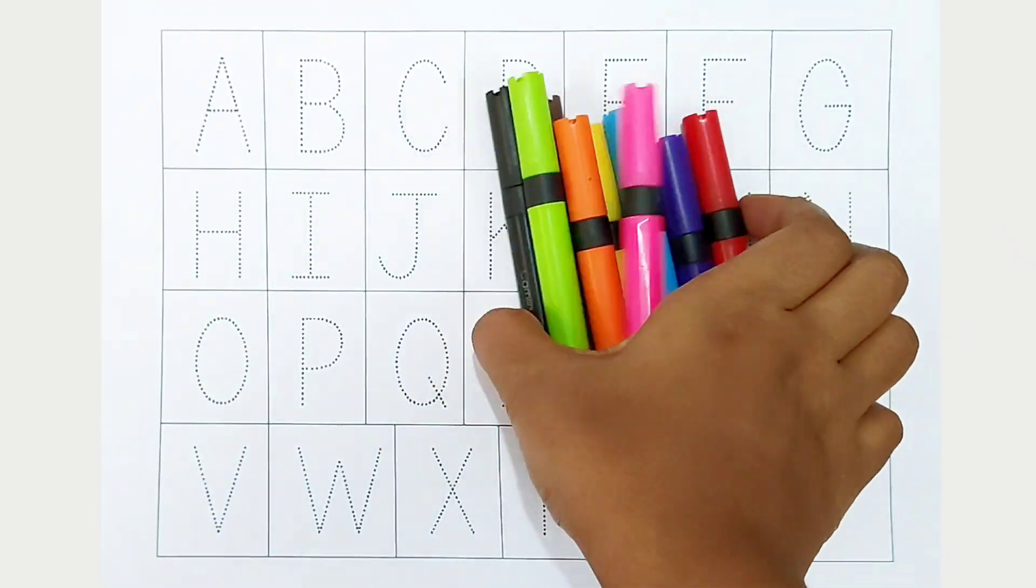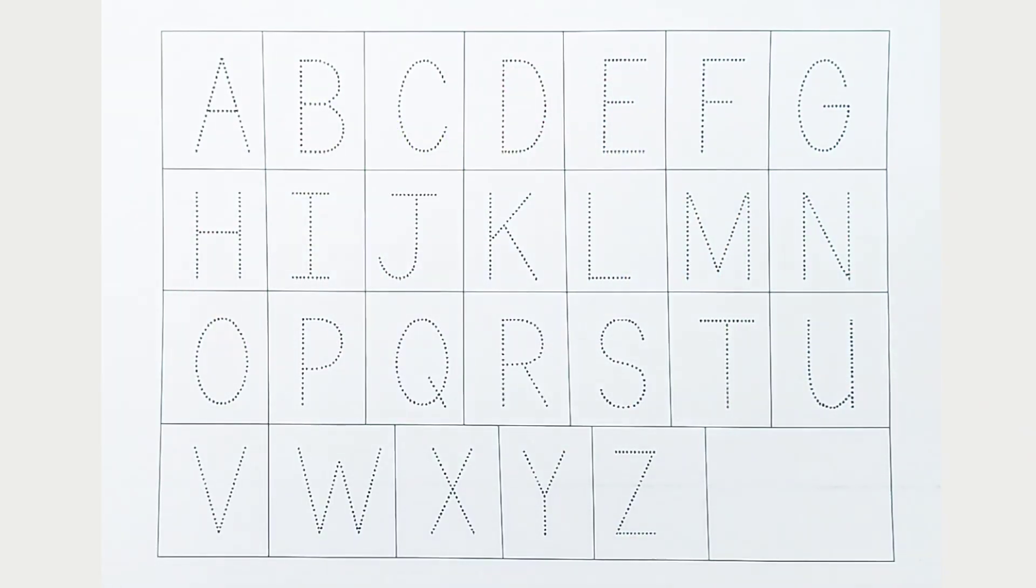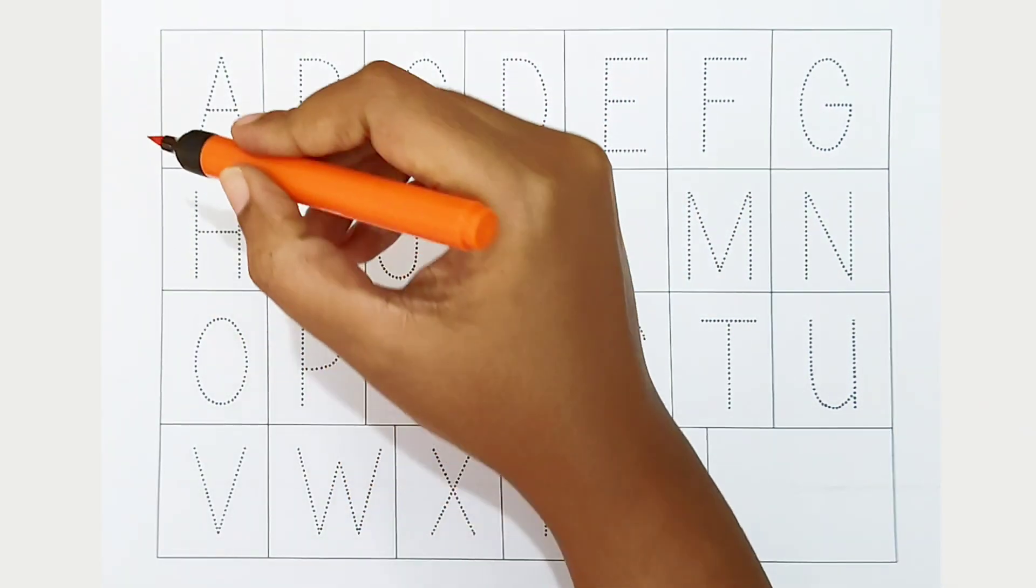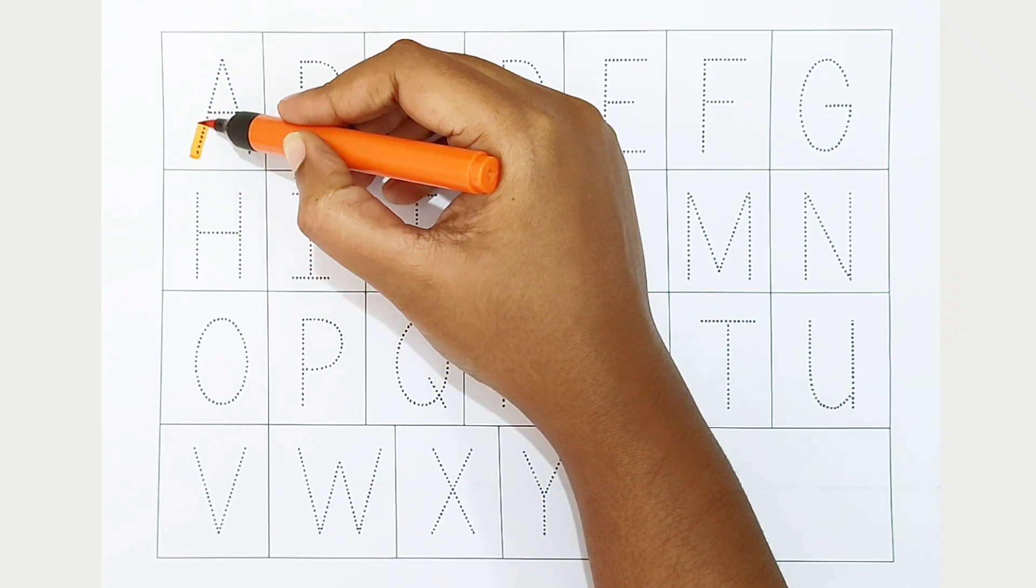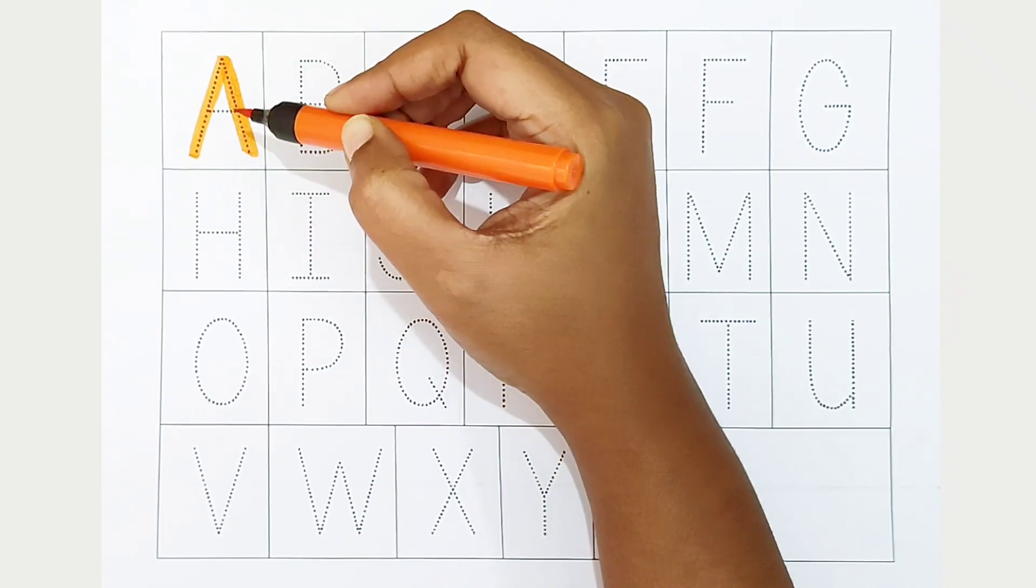Hi kids, today we can learn the alphabets from A to Z. Let's begin! A, orange color. A is for aeroplane.